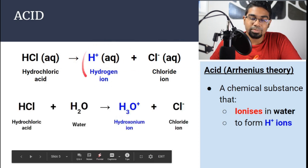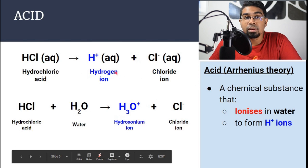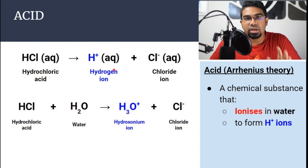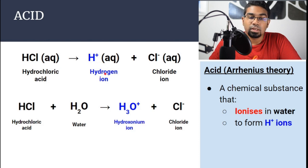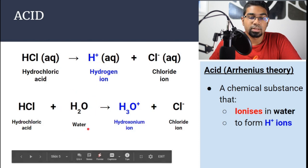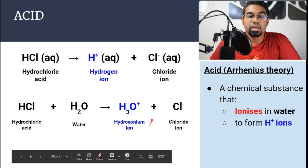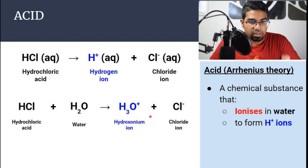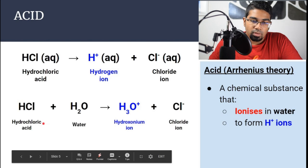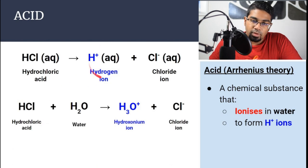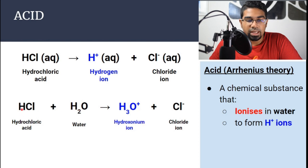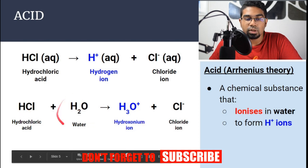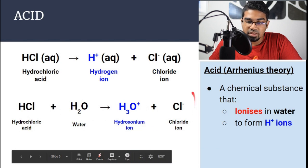Normally, we write H+ ions as H+. However, in the real scenario, H+ ion doesn't exist by itself. It will combine with water to form the hydroxonium ion. This is through dative bonding. So the full equation is actually HCl + H₂O → hydroxonium ion + chloride ion.